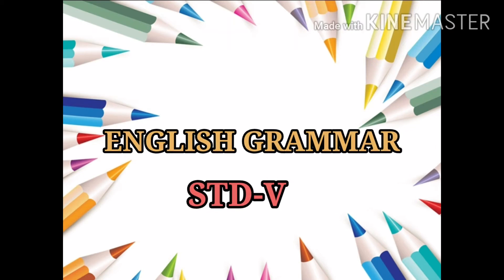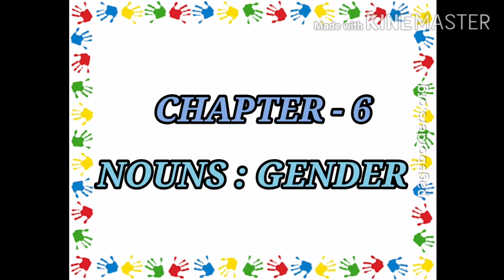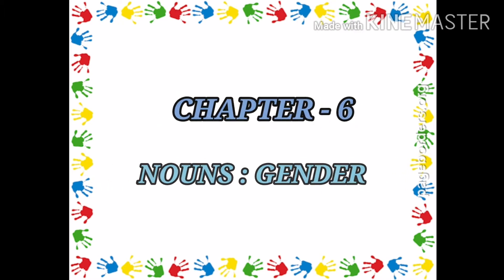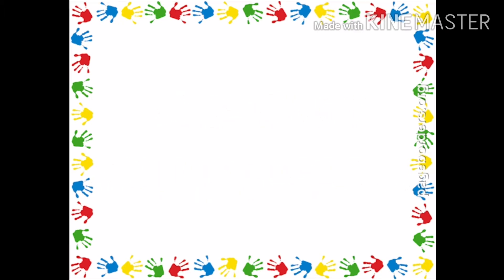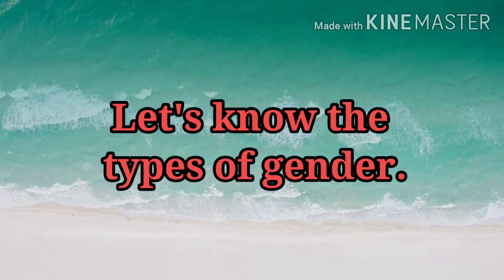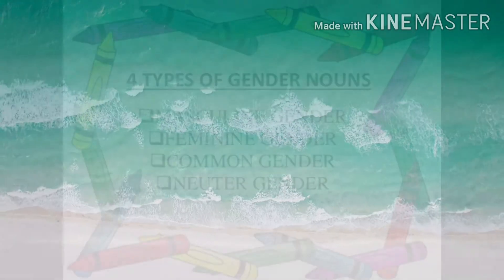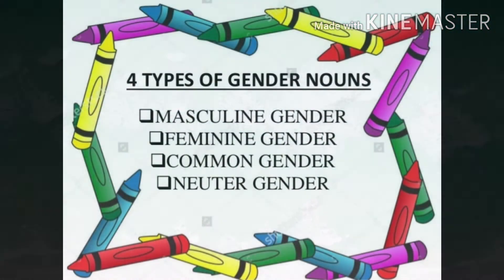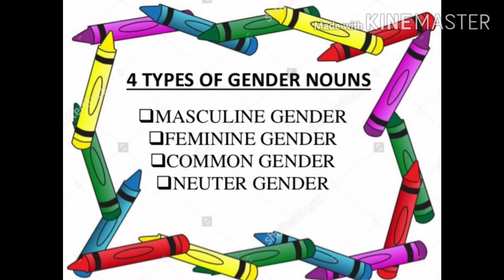Good morning students. Today we will learn nouns gender. Let's know the types of gender. There are four types of gender: masculine gender, feminine gender, common gender, and neuter gender.